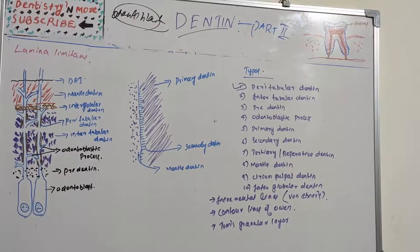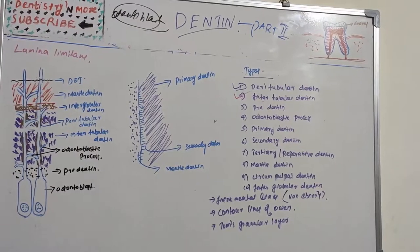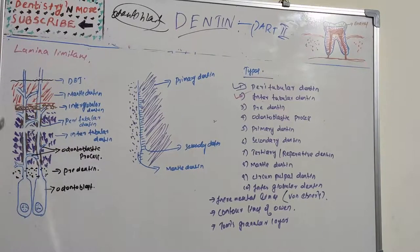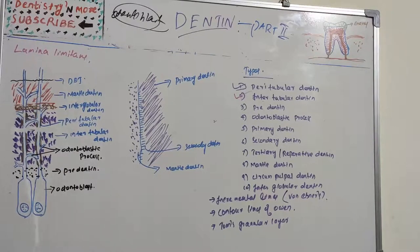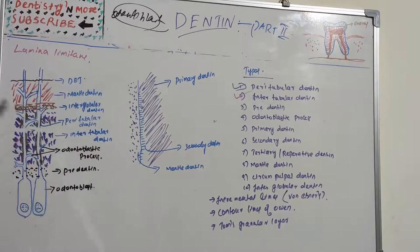Now the second type is intertubular dentine, which is located between the dentinal tubules. Between the dentinal tubules we have intertubular dentine, which is less mineralized than the peritubular dentine that immediately surrounds the tubules. One half of its volume is organic matrix, especially collagen fibers, and it is seen between the zones of peritubular dentine.